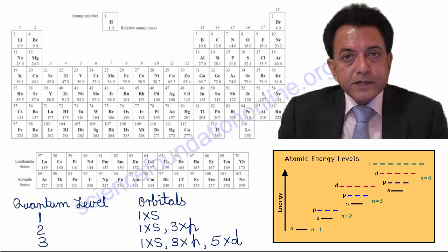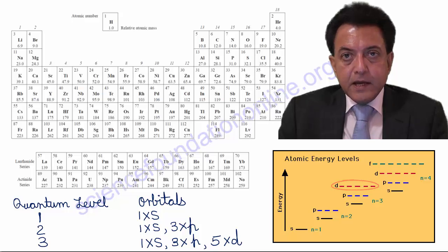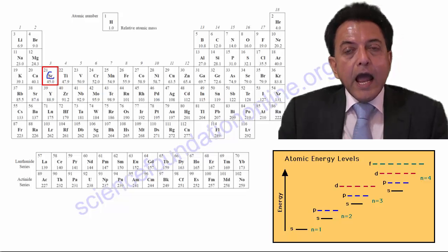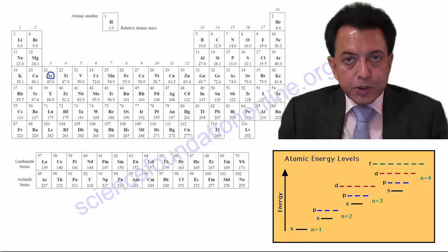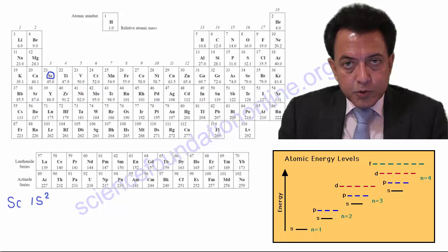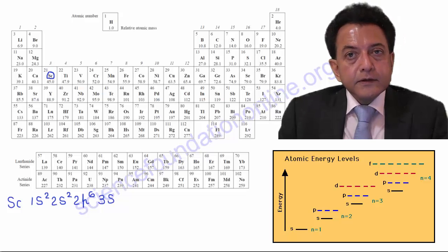Why is that? Because the 4s orbitals are lower in energy than the 3d orbitals. It is only once we get to scandium that the 4s orbital has been filled and electrons can now enter the 3d orbitals. So, by filling these orbitals with electrons, starting with the lowest energy orbital and then proceeding upwards, we can represent the electron configuration of scandium as 1s2, 2s2, 2p6, 3s2, 3p6, then it is 4s2, and then 3d1.